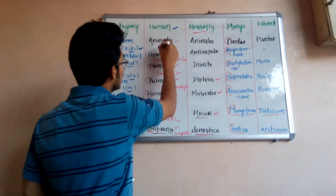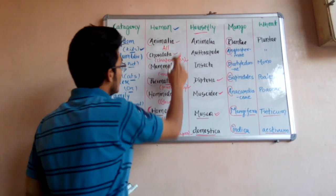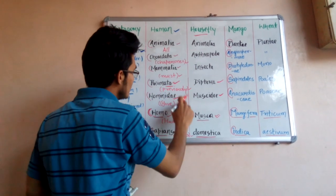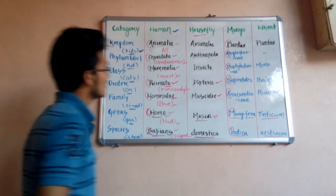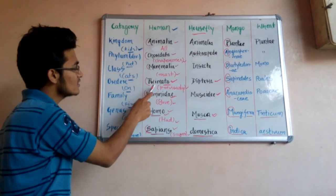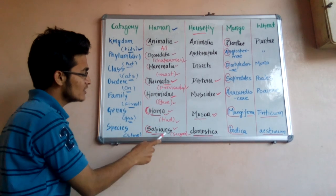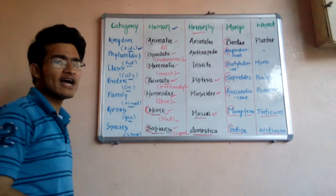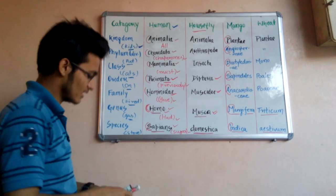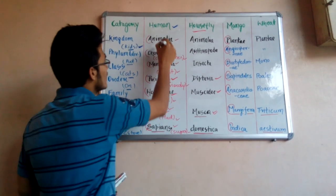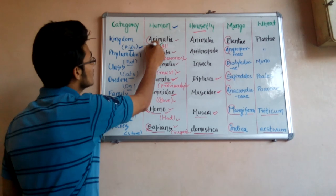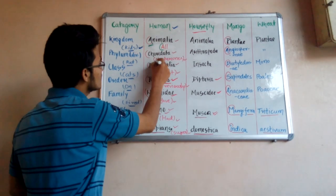There is a simple trick to memorize the human taxonomical hierarchy: 'All chaperons must previously have had sugar.' This is a simple English sentence. We have to emphasize the first alphabet of each word — for example, in 'All,' A is the first letter, which stands for Animalia.